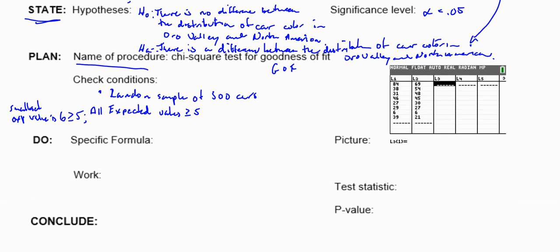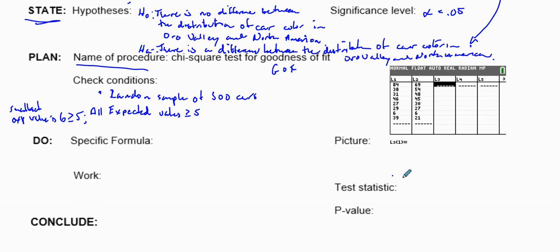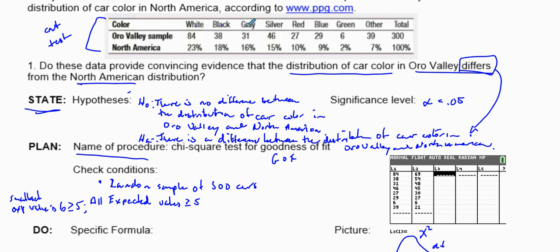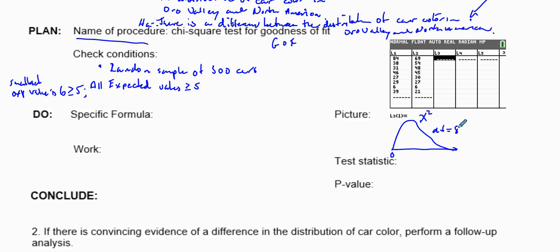Now we draw our chi-square distribution. It starts at zero and is skewed to the right. We need our degrees of freedom: we have eight categories, so degrees of freedom = 8 − 1 = 7. That means our mean is 7. Now we'll find our chi-square statistic.